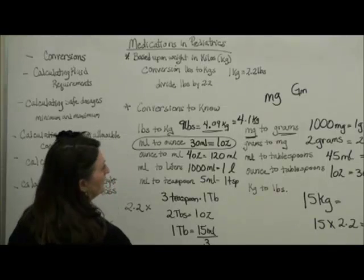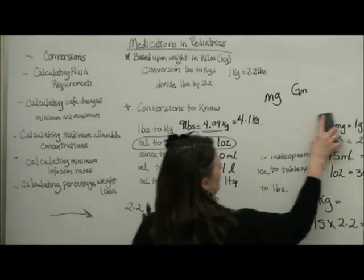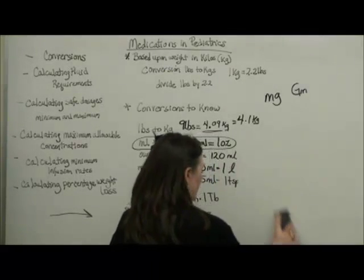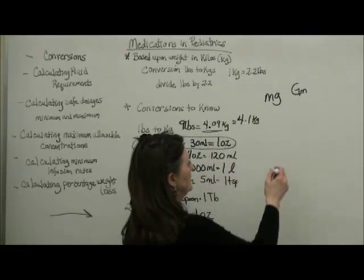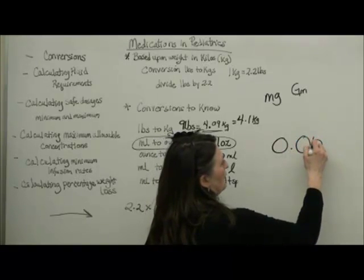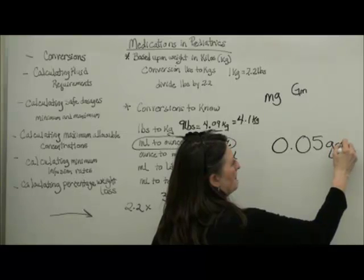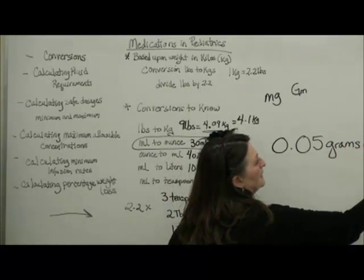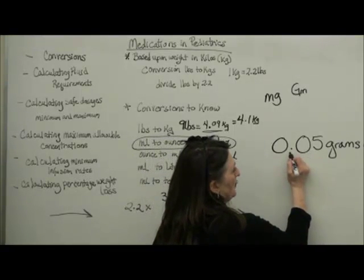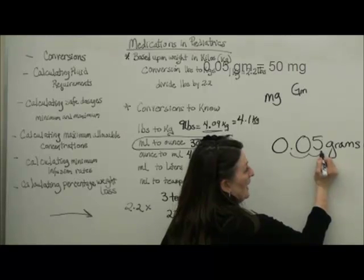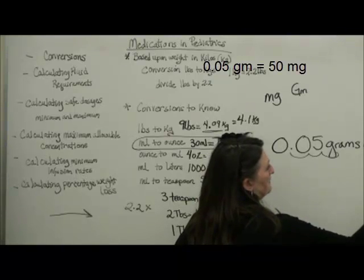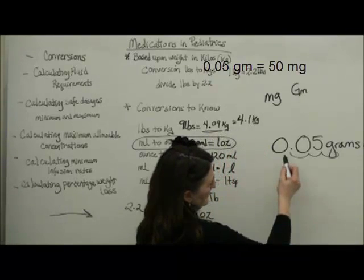One last example that my students sometimes get confused on is when we have to deal with decimal points. So, if I have 0.05 grams, how many milligrams is that? I'm going to multiply by a thousand. So, I'm going to move my decimal point one, two, and add one three places. So, it is equal to 50 milligrams.